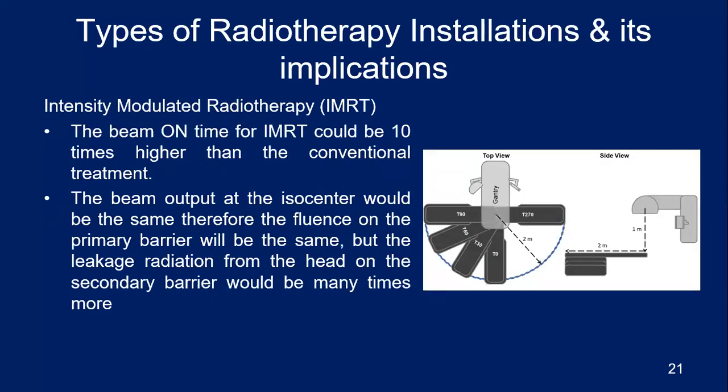For IMRT, the beam-on time could be 10 times higher than conventional treatment, so leakage could be much higher. The beam output at the isocenter would be the same — still delivering perhaps 3 gray per patient — but the leakage radiation from the head would be much higher because of the longer beam-on time. Therefore, if you are planning to use the machine for IMRT, the leakage workload must include this IMRT factor of 10. This is one of the safety factors applied when calculations are not straightforward.